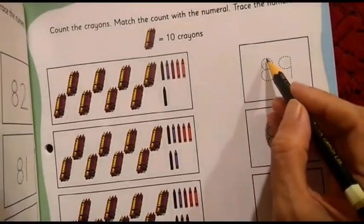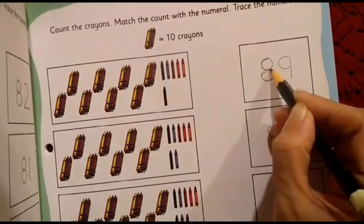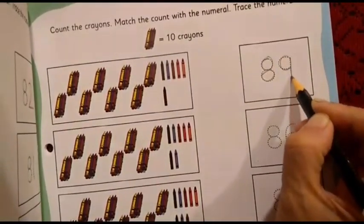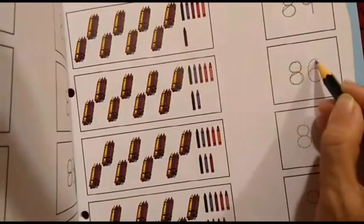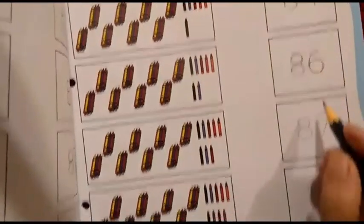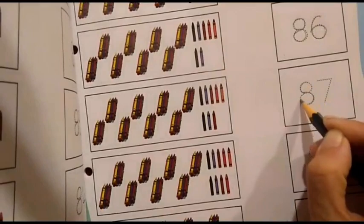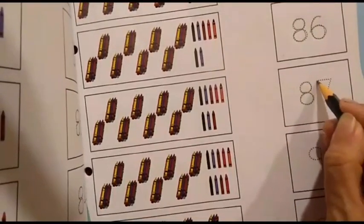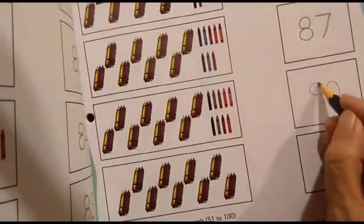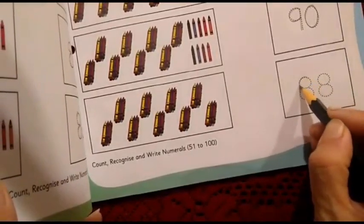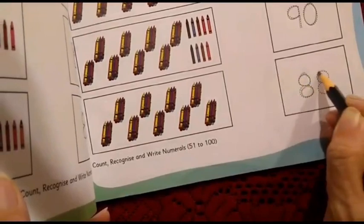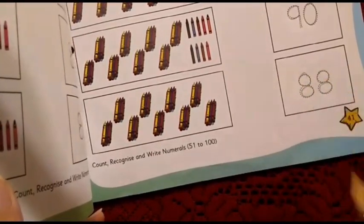Now, let's come to this page. Let us trace the numbers. 8, 8, 9, 89. 8, 6, 86. 8, 7, 87. 9, 0, 90. Then, 8, 8, 88.